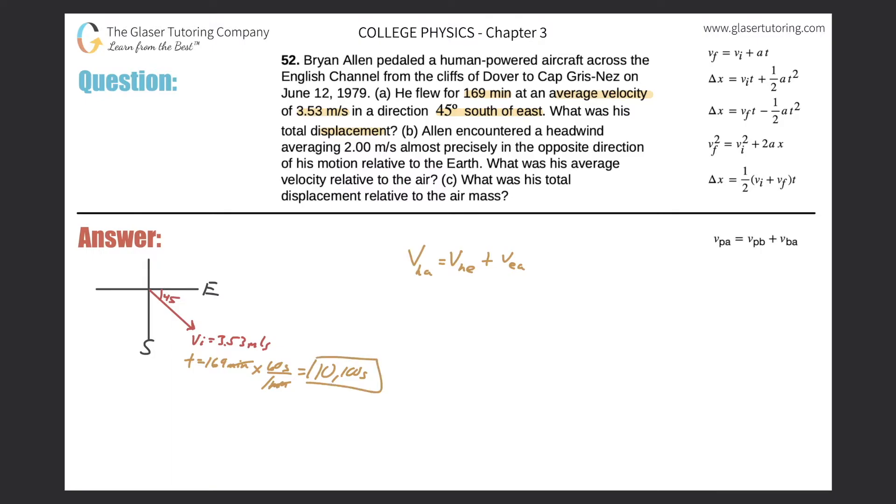Alright, cool. So now total displacement. They want the displacement, he's flying in a straight line, right? So there are no x and y components we need to calculate for this. So it's a fairly straightforward problem. It's just average velocity will equal the displacement over time.